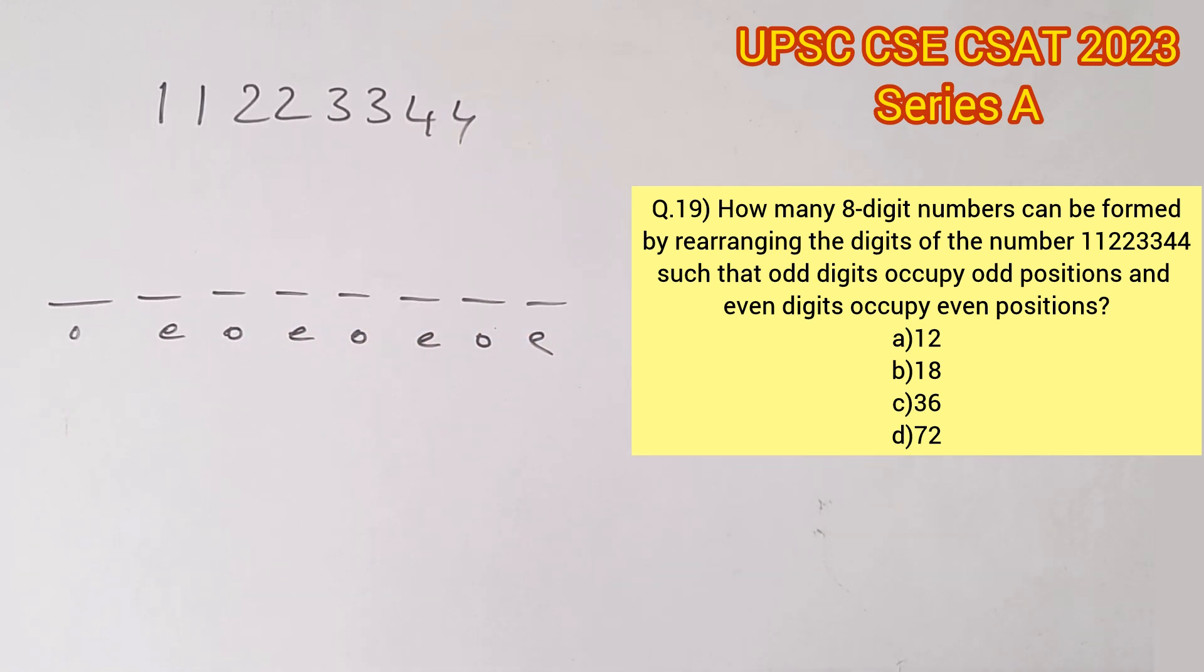So the first position is occupied by an odd digit and the second by even, third by odd, fourth by even, fifth by odd, sixth by even, seventh by odd, and eighth by even. If we take a look at the digits provided, not all are distinct. We have repetition of digits. The odd values are 1 and 3, and